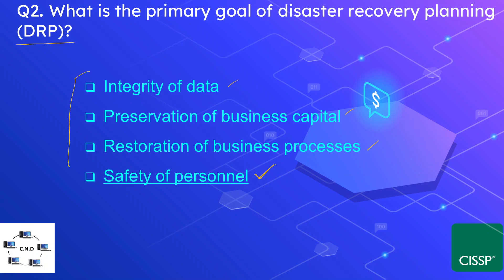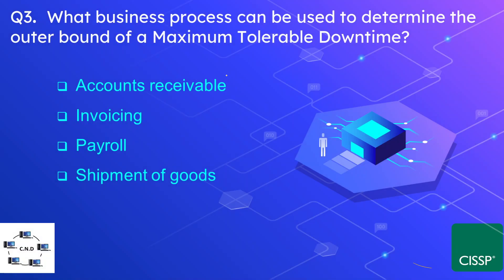All other factors are also correct, but the most significant is always the safety of personnel. Question number 3: What business process can be used to determine the outer bound of maximum tolerable downtime or MTD? The options are accounts receivable, invoicing, payroll, and shipment of goods. The correct option is payroll. Payroll is one of the most important factors while measuring the MTD, because if employees' pay is affected, the business operations of the organization are certainly going to be affected.